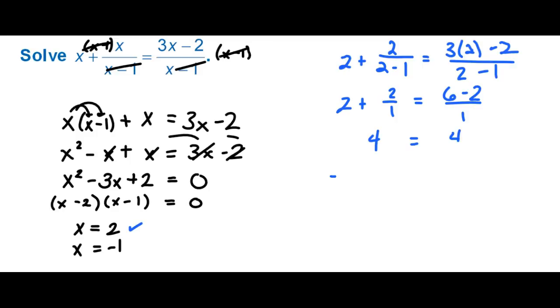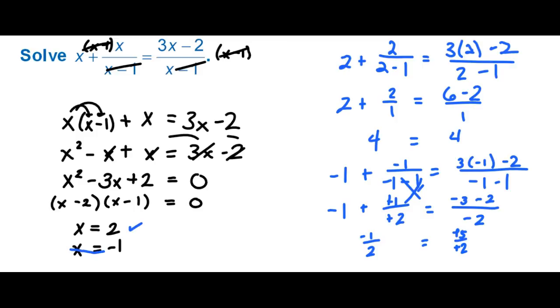Let's try negative 1. Negative 1 plus negative 1 over negative 1 minus 1 equals 3 times negative 1 minus 2 over negative 1 minus 1. So we have essentially positive 1 plus 1 half here. So negative 1 plus 1/2 would be negative 1 1/2 and then negative 1 minus 2 is negative 5/2 is negative 2 1/2, clearly not the same as negative 1 1/2. So when we check that out it does not work, so x equals negative 1 is an extraneous solution so my final answer should just be x equals 2.